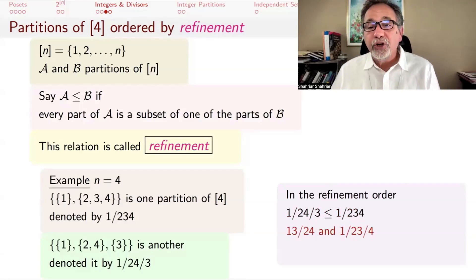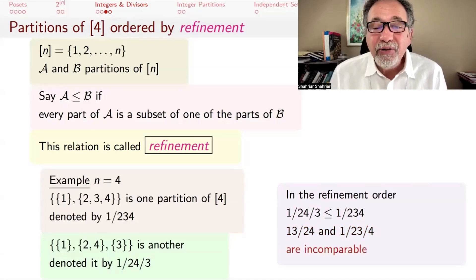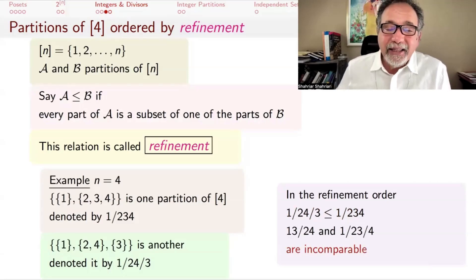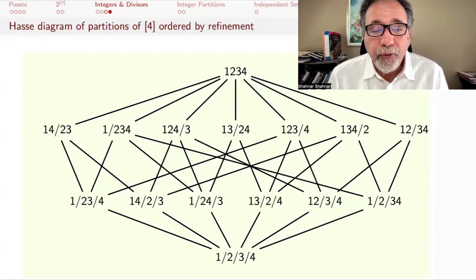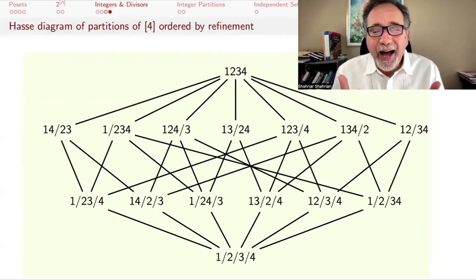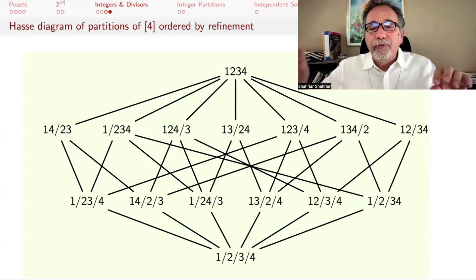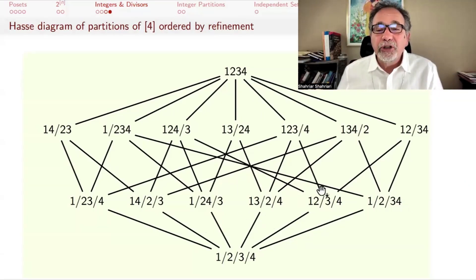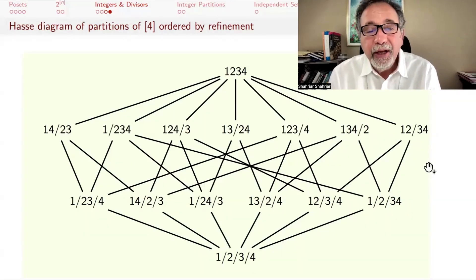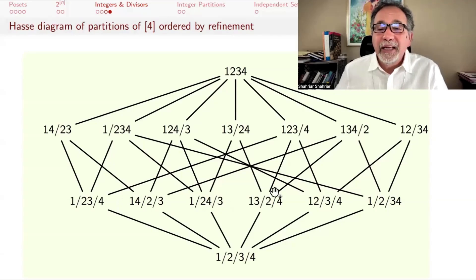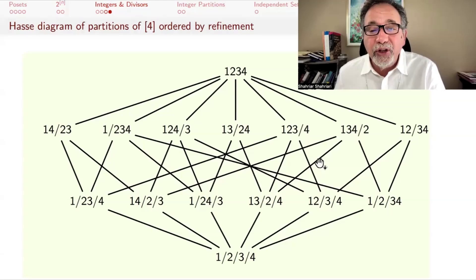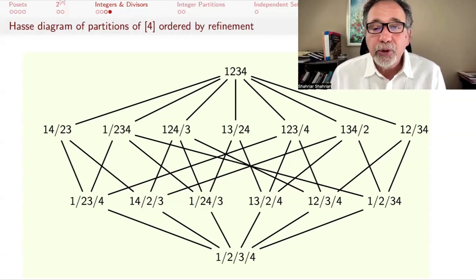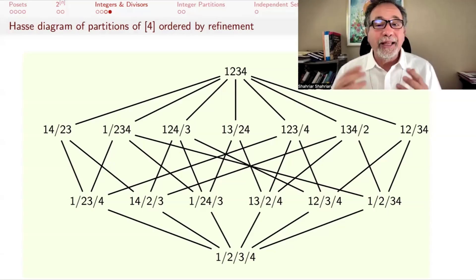On the other hand, the partitions {1,3} | {2,4} and {1,2} | {3,4} are incomparable — neither is a refinement of the other; you can't start with one and split things further to get the other. Here are all partitions of {1,2,3,4} ordered by refinement. At the bottom is the finest partition with all singletons; at the top is the single-part partition. The second row has partitions into three parts, and the third row from the bottom has partitions into two parts. The number of partitions into exactly k parts is counted by a Stirling number of the second kind.